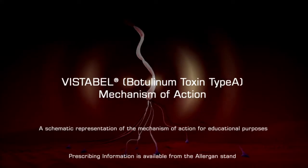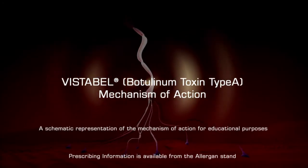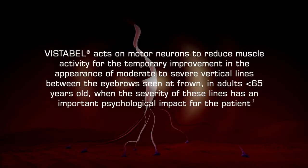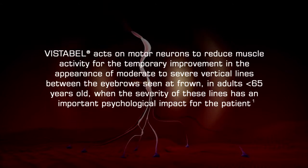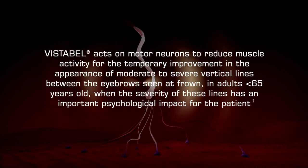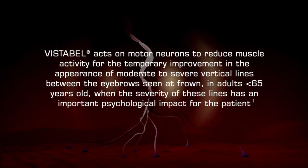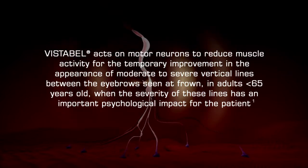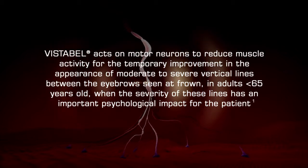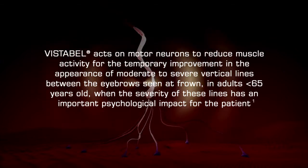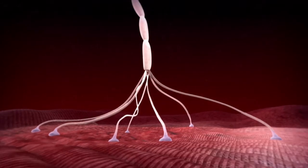In this video, you will see how Vistabel acts on motor neurons to reduce muscle activity for the temporary improvement in the appearance of moderate to severe vertical lines between the eyebrows seen at frown in adults up to 65 years old, when the severity of these lines has an important psychological impact for the patient.